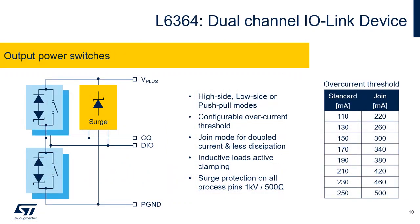Just a few details on the integrated power stages. There are two identical channels embedded with possibility to select high side, low side or push-pull modes. They have configurable overcurrent thresholds as visible in the table. They can operate either independently and drive currents between 110 and 250 milliamps, or they can be switched in so-called join mode. In that case the output currents are doubled and can go up to 500 milliamps. The equivalent on resistance is halved and power dissipation reduced. The power switches are capable to drive inductive loads with active clamping function for their fast turn off. All the process pins are protected against surge pulses up to 1 kV using 500 ohm surge generator coupling.